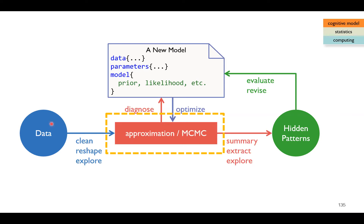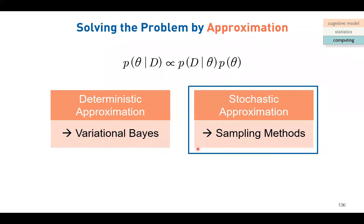MCMC belongs to the category of stochastic approximation methods, as opposed to deterministic approximation methods like variational Bayes. If you have an unknown distribution that's too complicated, one way is to draw samples from it — if you draw enough samples and take a histogram, the samples will resemble the shape of the curve. This sampling approach is how MCMC works at a conceptual level.